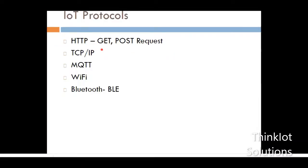These are the protocols we are going to cover: HTTP, including the basic GET and POST methods, and TCP/IP protocol. We will also see the MQTT protocol. Wi-Fi and Bluetooth Low Energy are listed but we will not be discussing those, as they are general terms we use in our day-to-day lives. We will discuss HTTP, TCP/IP, and MQTT in basics here, and cover them in much more detail when implementing on Amazon AWS.